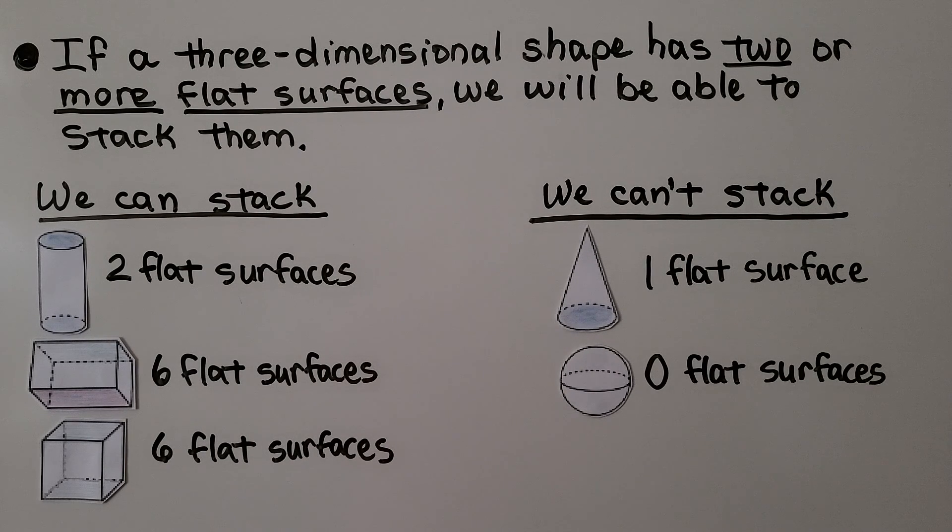We can stack a cylinder. It has two flat surfaces. We could stack a rectangular prism. It has six flat surfaces. And we could stack cubes. They have six flat surfaces.